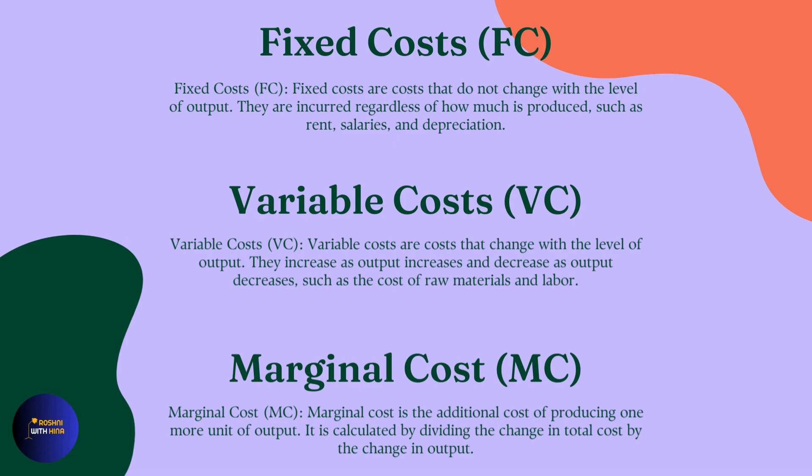Marginal Cost, abbreviated as MC. Marginal cost is the additional cost of producing one more unit of output. It is calculated by dividing the change in total cost by the change in output.